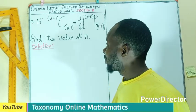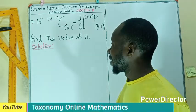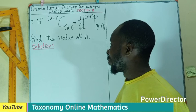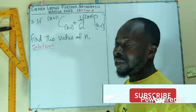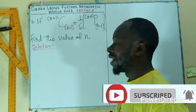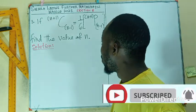Welcome. Question number 3. If n+1 combination n-1 equals 1/6 times n+1 permutation n-1, we have to find the value of n.